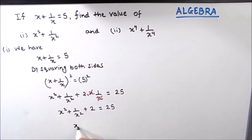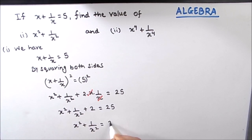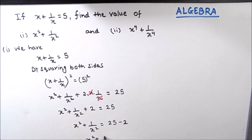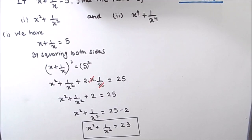So x squared plus 1 by x squared will be equal to 25. We transpose 2 to the right hand side, giving negative 2. So x squared plus 1 by x squared is equal to 23. That is the value of x squared plus 1 by x squared.